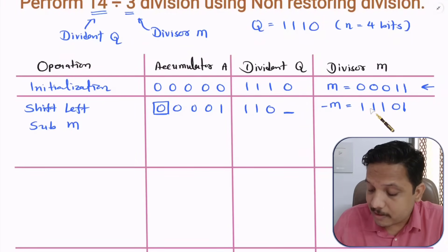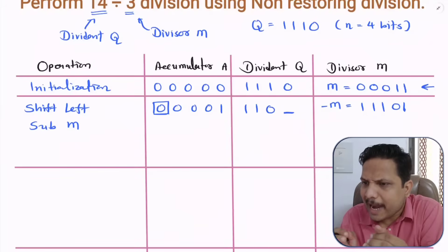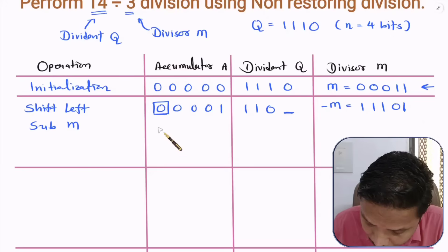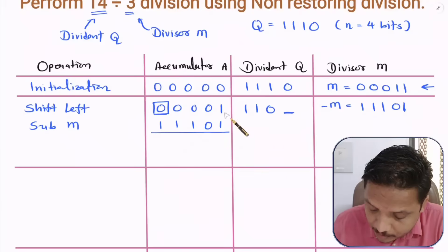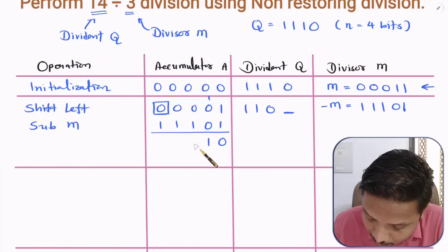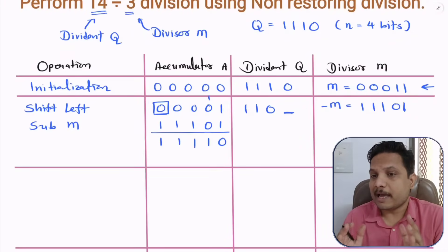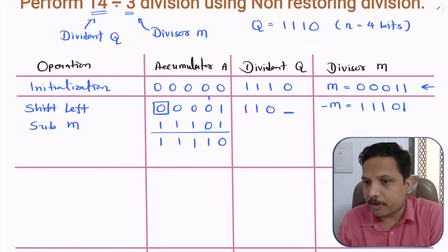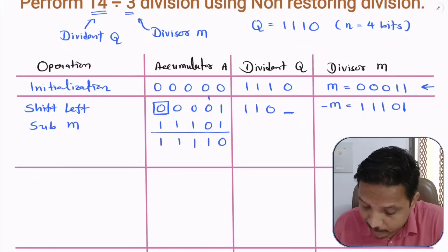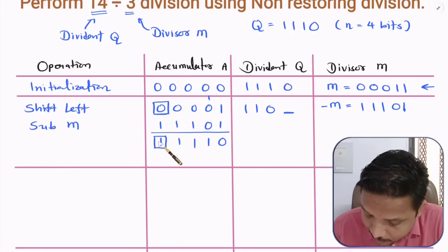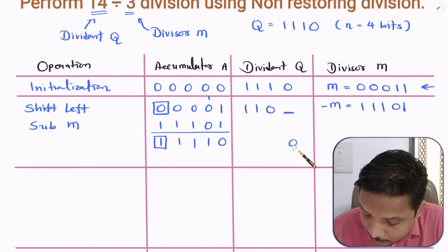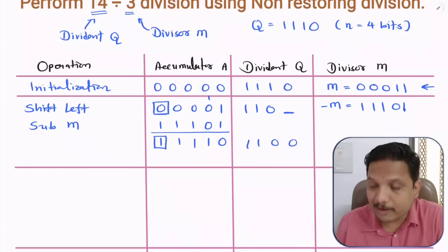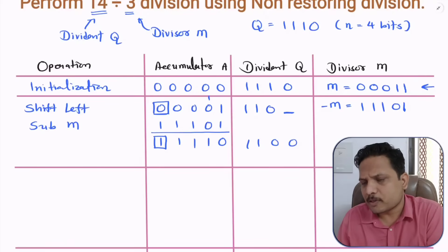Step 1: After shift left, the sign bit is 0, so we perform subtract M by adding -M = 11101 to the accumulator. The result gives a sign bit of 1. Since the sign of the accumulator after the operation is 1, the quotient bit (the blank bit) is set to 0. We now have our values for step 1 complete.